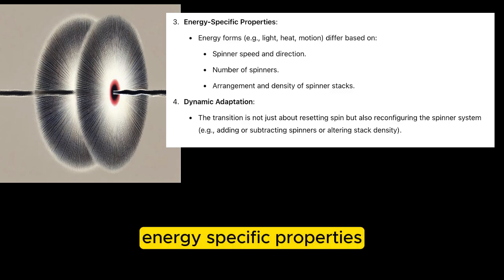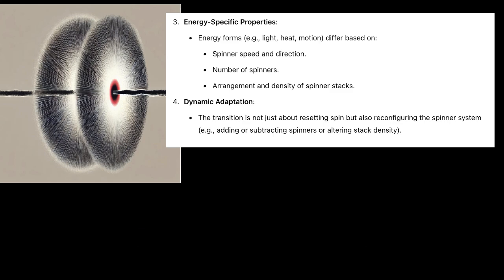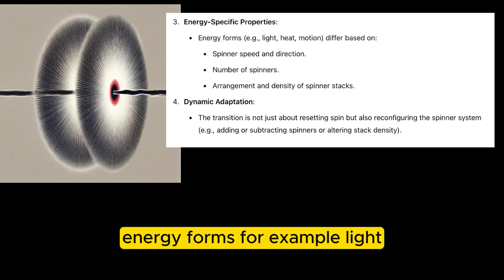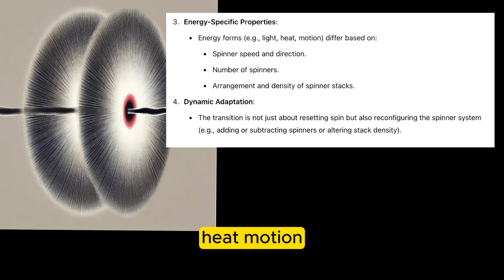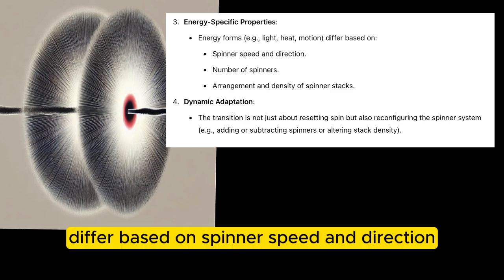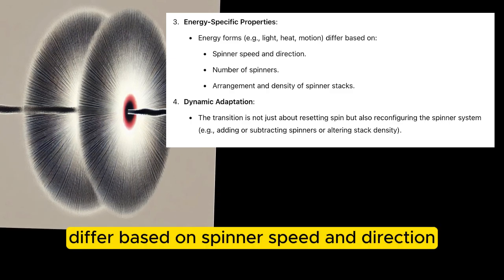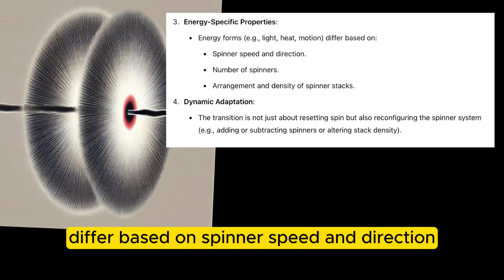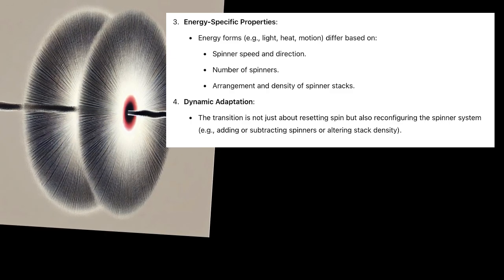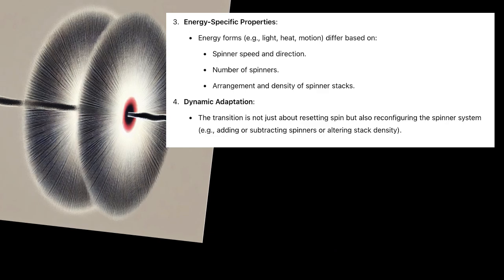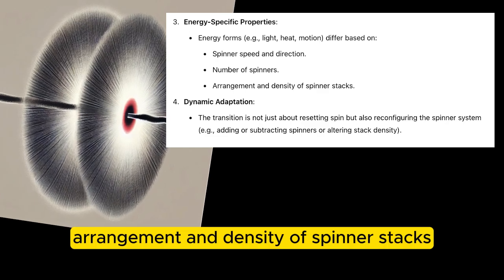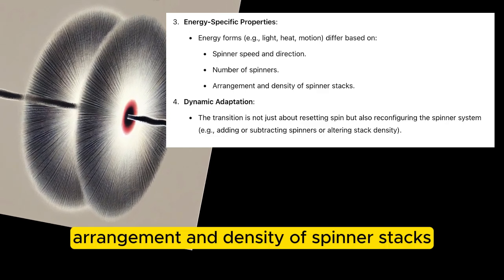Energy-specific properties: energy forms — for example, light, heat, motion — differ based on spinner speed and direction, number of spinners, and the arrangement and density of spinner stacks.